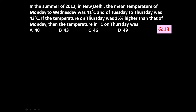The given problem is: in the summer of 2012 in New Delhi, the mean temperature of Monday to Wednesday was 41 degree Celsius, and that of Tuesday to Thursday was 43 degree Celsius. If the temperature on Thursday was 15 percent higher than that of Monday, then the temperature in degree Celsius on Thursday was — we have to find it out.